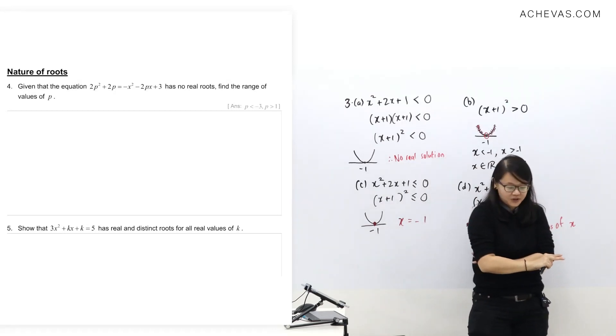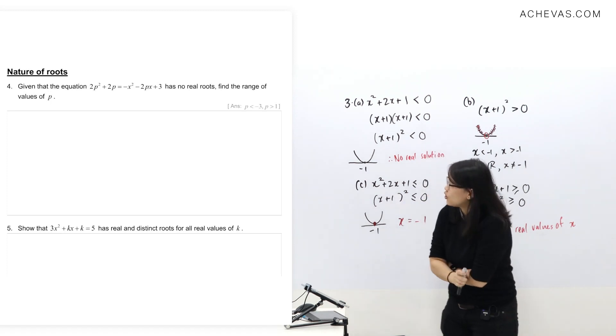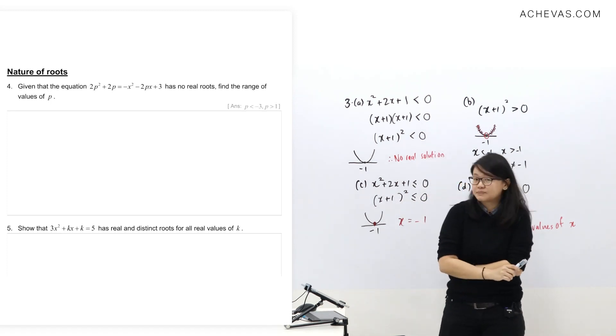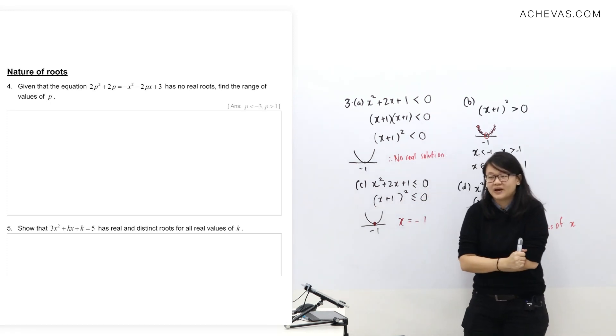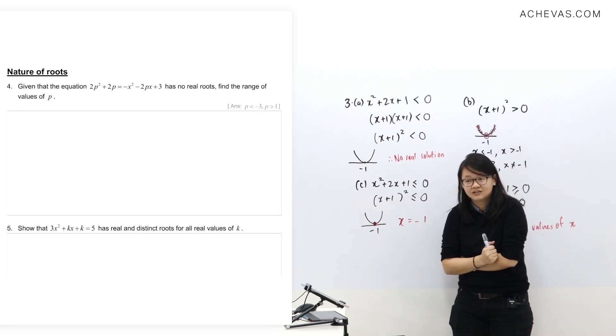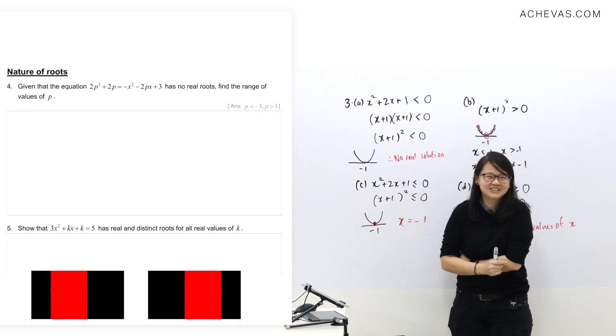I picked question four because some students get confused. They look at the question and see there's two variables - one is p, one is x - and both have squares. Then you're confused what's the coefficient a. If you don't get confusion it means you're very good at it.